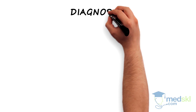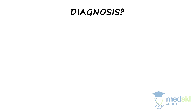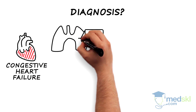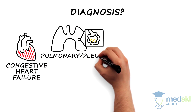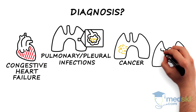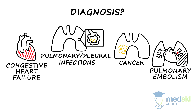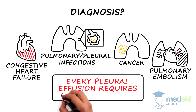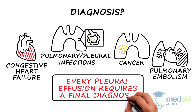The diseases that most often present with effusions are congestive heart failure, pulmonary and pleural infections, cancer, and pulmonary embolism — so do a targeted anamnesis. And remember: every pleural effusion requires a final diagnosis.